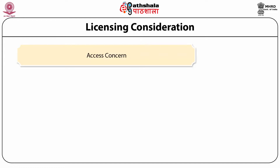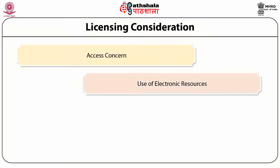Access concern: authorized users and authorized sites should be defined as broadly as possible. Authorized users should be permitted to access the electronic resource from anywhere via the organization's secure network. Authorized users' access should be permitted via IP authentication for the entire institution, including simultaneous access for multiple users. The license should permit fair use of all information for non-commercial, educational, instructional and research purposes by the libraries and authorized users, including viewing, downloading, ILL, e-reserves and course packs.